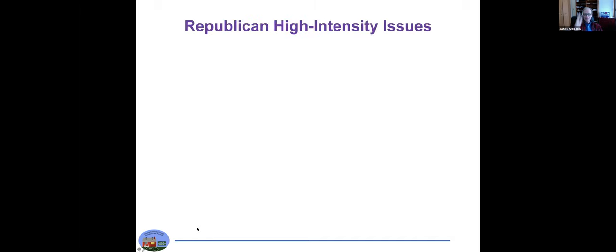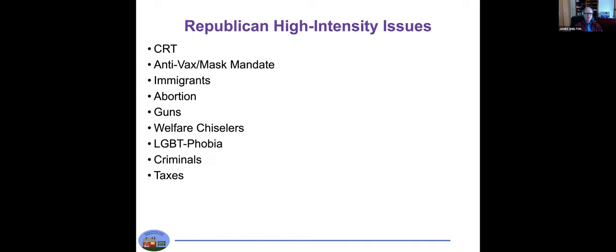Here are the Republican high intensity issues. We've heard about education and critical race theory, but also anti-vax and mask mandate, guns. They've been doing the welfare chiseler thing for decades, LGBT phobia. The thing is that pretty much all of these things, the majority of voters are against them, but there are some people that are so concerned about abortion or so worried about their guns or so worried about socialism or criminals. I talked to voters who were up in arms about the vaccine mandate.